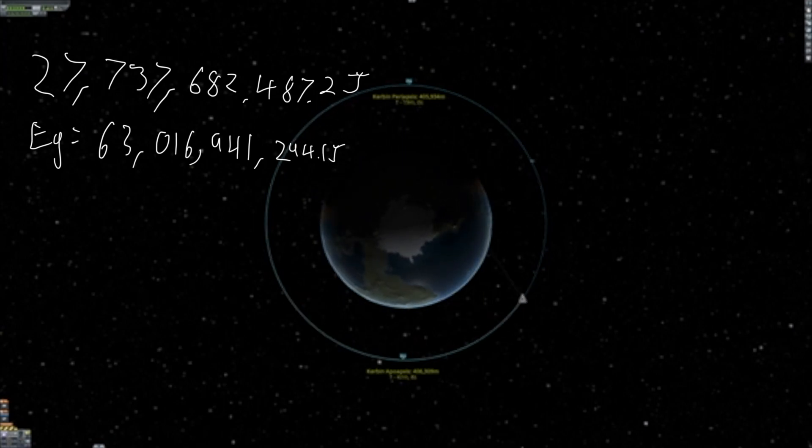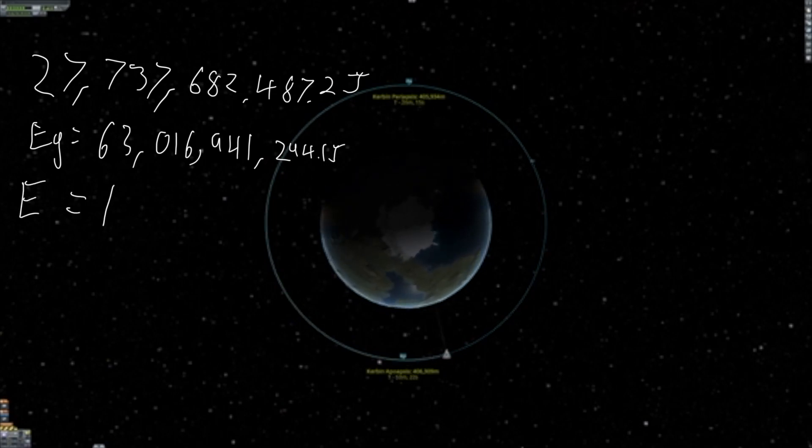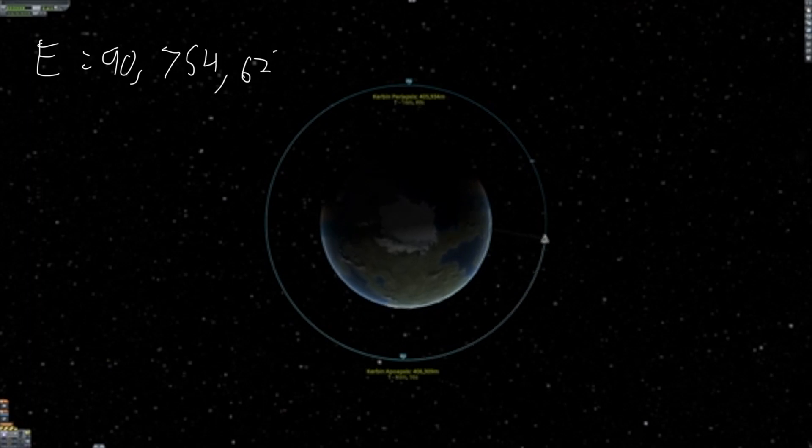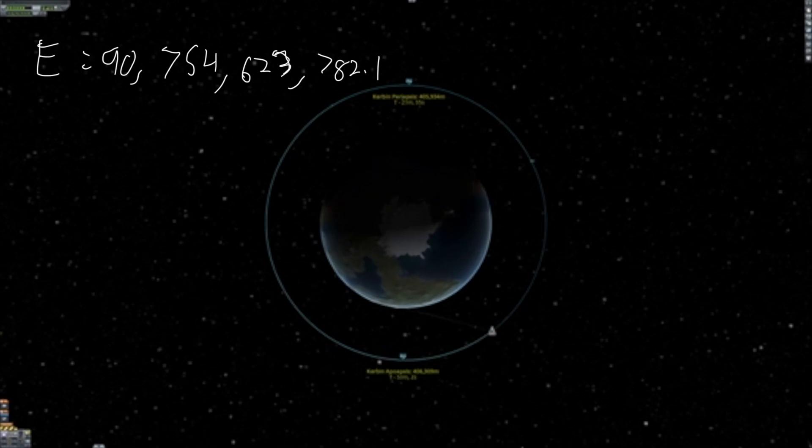Now to find the total energy in our orbit, we just add them up. We can see that the total energy in the orbit is 90,754,623,782.1 joules.